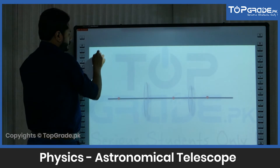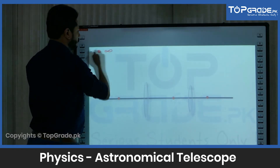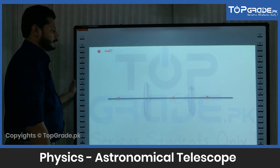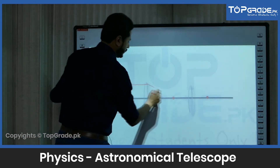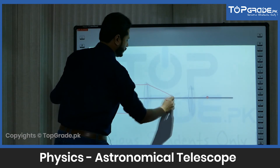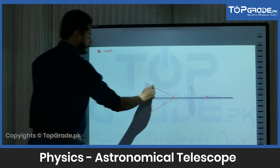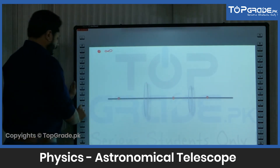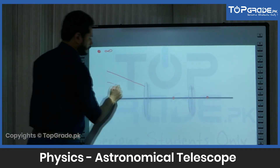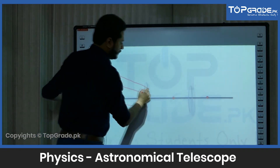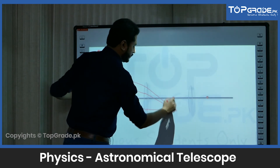Astronomical objects are so far from us that the observing distance is considered infinite. We have learned that rays from infinity are parallel, and they converge on focus points. But here, keep in mind: if rays from infinity are parallel but the lens is not parallel to them, then the image will form at the focus.